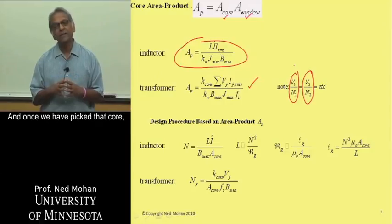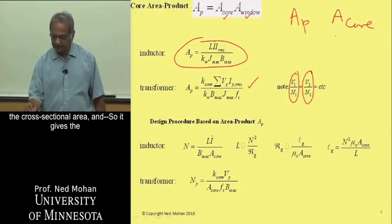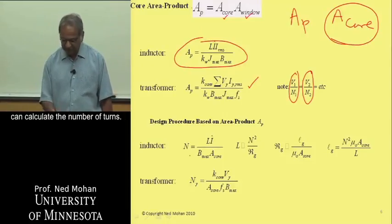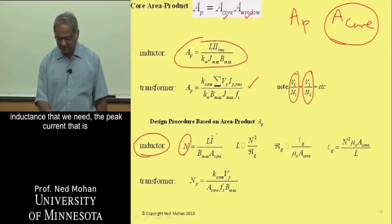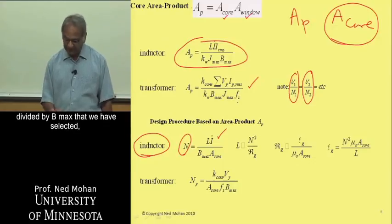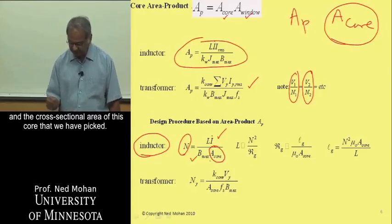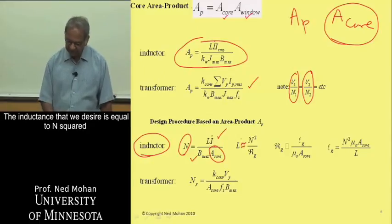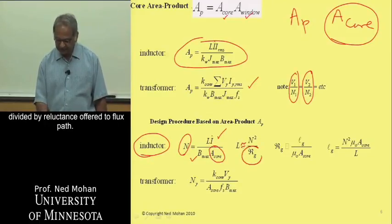Once we have picked that core, it gives us the area product but also the cross-sectional area of the core. With that, we can calculate the number of turns. For an inductor, the number of turns is calculated based on the inductance needed, the peak current specified, divided by Bmax selected and the cross-sectional area of the picked core. Once we have the number of turns, the inductance we desire equals N squared divided by the reluctance offered to the flux path.